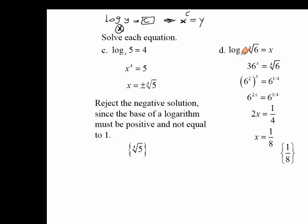Next example: we have log of the fourth root of 6 equal to x, and we're looking for x. Our base is 36. Using the same formula to convert this logarithm into exponential: 36 to the power of x is equal to the fourth root of 6. Now there's no log anymore — it's in exponential form. To solve this, we need to make the bases the same, since if a to the power of x equals a to the power of y, the exponents must be equal.